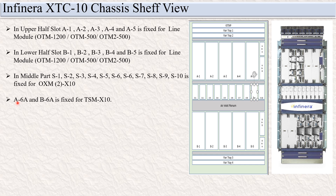A6A and B6A is for the TSM card. And A6B and B6B is for the Axiom card.